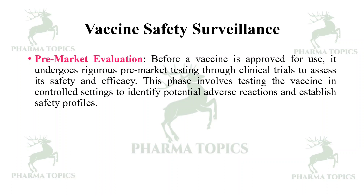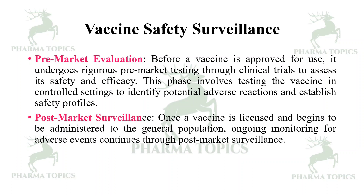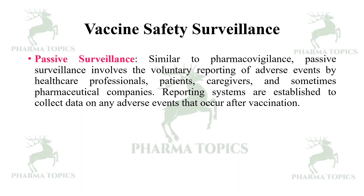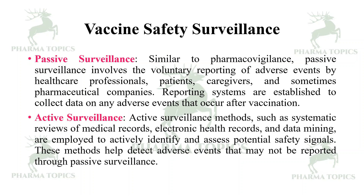Before a vaccine is approved, it undergoes rigorous pre-market testing through clinical trials to assess its safety and efficacy, identifying potential ADRs and establishing safety profiles. Once the vaccine is licensed and administered to the general population, ongoing monitoring continues through post-marketing surveillance. Similar to pharmacovigilance, passive surveillance involves voluntary reporting of adverse events by healthcare professionals, patients, and caregivers. Active surveillance methods such as systematic review of medical records, electronic health records, and data mining are also employed to actively identify and assess potential safety signals.